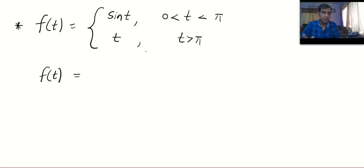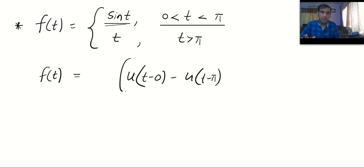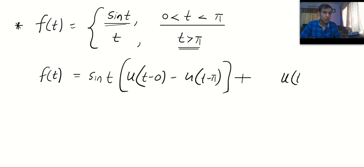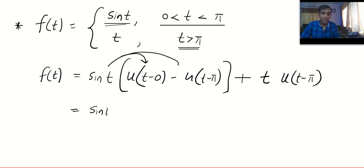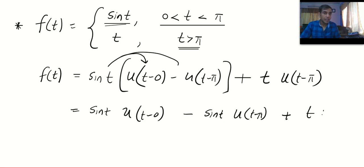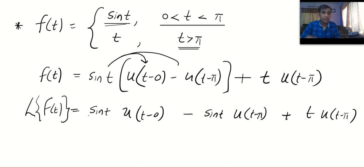First, convert the piecewise function into unit step form. To generate sin(t) between 0 and π, write [u(t − 0) − u(t − π)] × sin(t). Then, to generate t after π, write u(t − π) × t. Distributing gives: sin(t) × u(t) − sin(t) × u(t − π) + t × u(t − π). Now we need to take the Laplace transform.